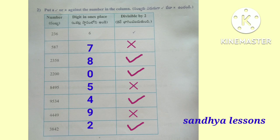4,449 — digit in ones place is 9, so it is not divisible by 2. 3,842 — digit in ones place is 2, so it is divisible by 2.